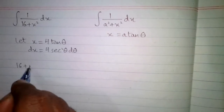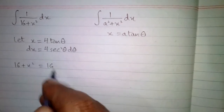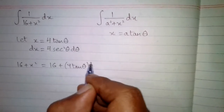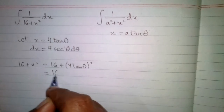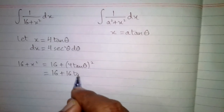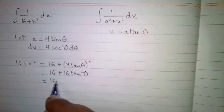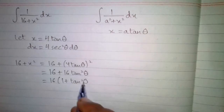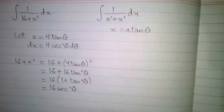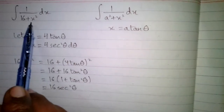Now we will find the value of 16 plus x square. We put the value of x, which is 4 tan theta, so we have 4 tan theta to the power 2. This gives us 16 plus 16 tan square theta. We can take 16 common, giving 16 times 1 plus tan square theta. And we know that 1 plus tan square theta is equal to sec square theta.